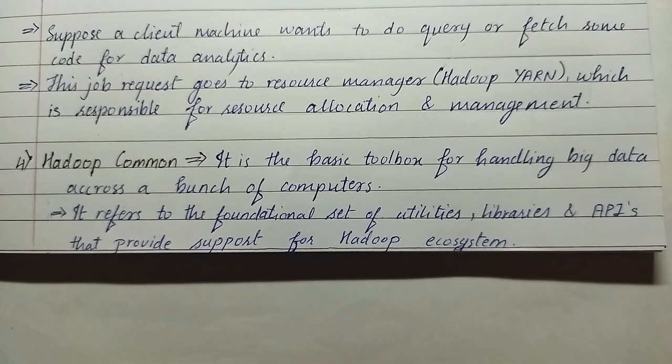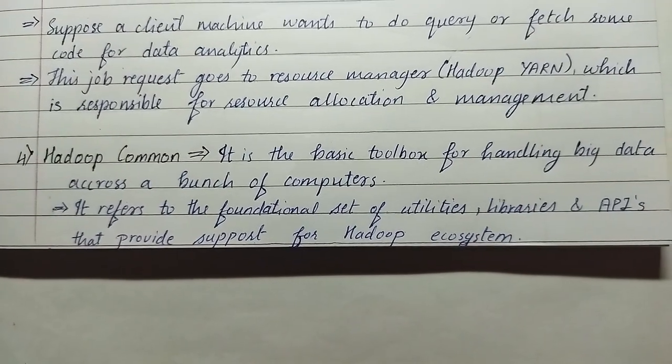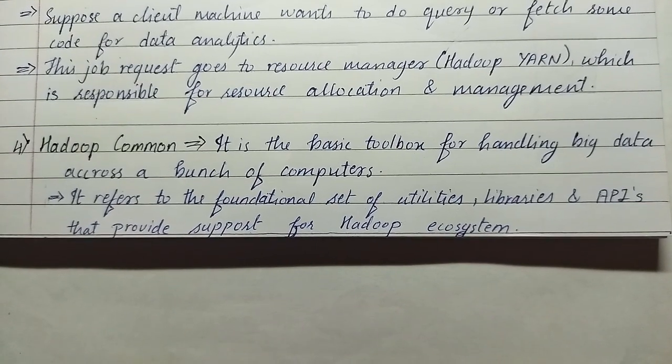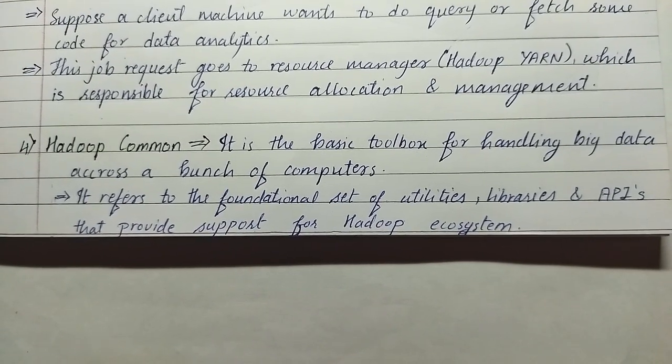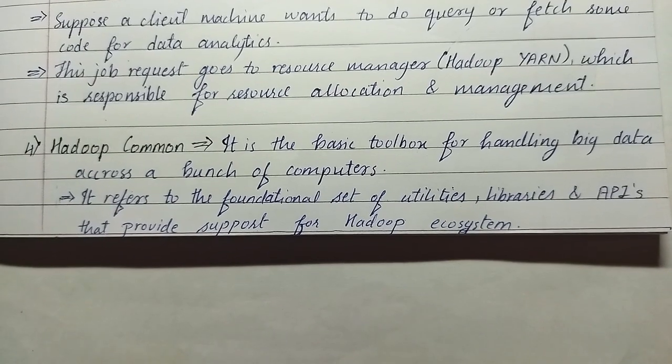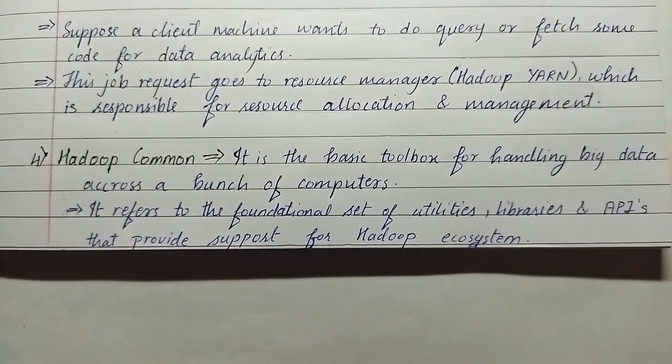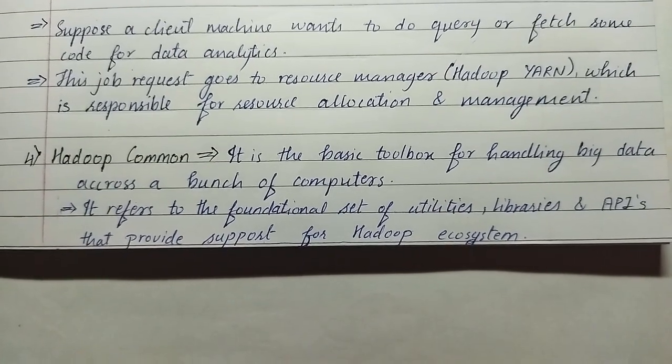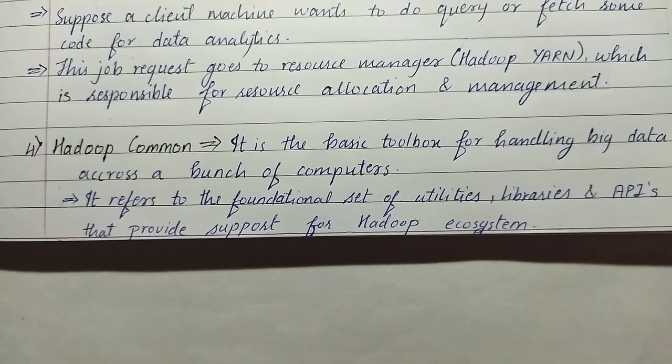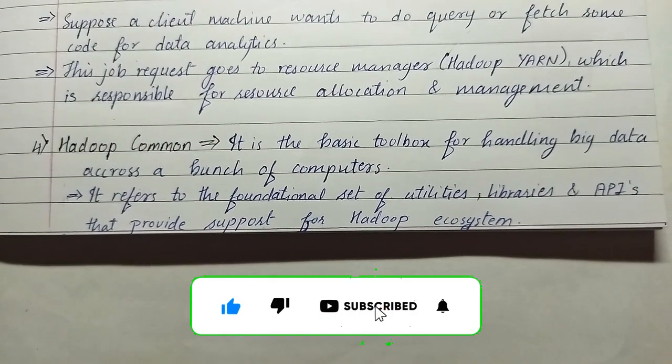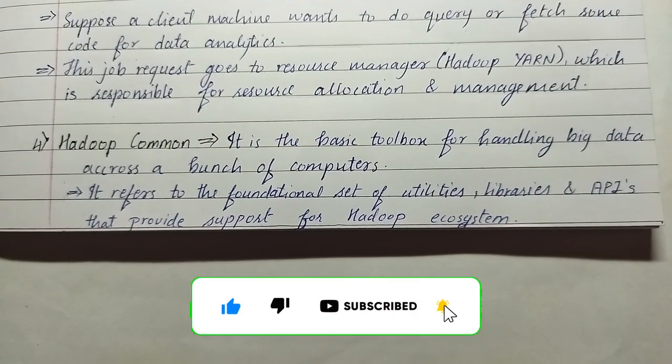The fourth component is Hadoop Common. It is the basic toolbox for handling big data across a bunch of computers, and it refers to the foundational set of utilities, libraries, and APIs that provide support for the Hadoop ecosystem. So this was it for the components of Hadoop, and thank you for watching till here.